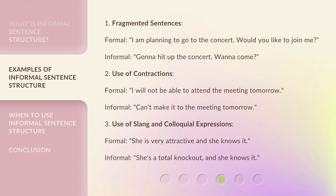Second, use of contractions. Formal: 'I will not be able to attend the meeting tomorrow.' Informal: 'Can't make it to the meeting tomorrow.' Third, use of slang and colloquial expressions. Formal: 'She is very attractive and she knows it.' Informal: 'She's a total knockout, and she knows it.'